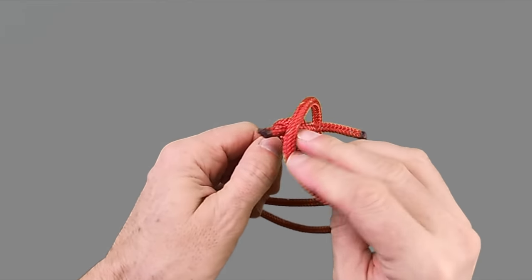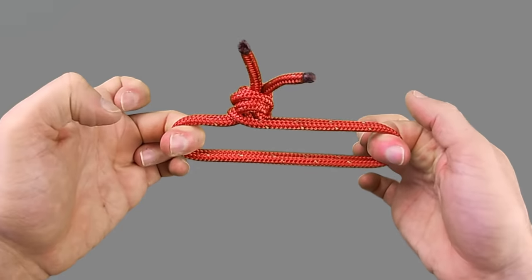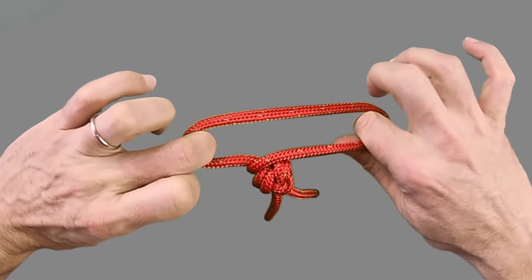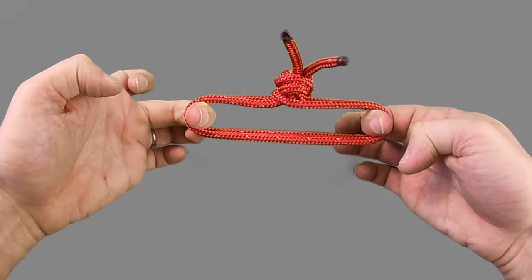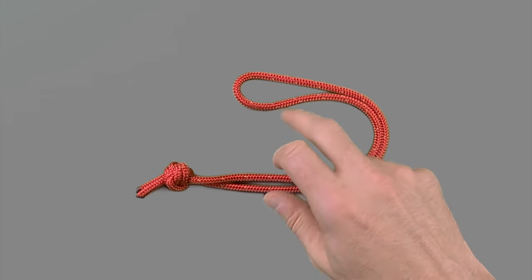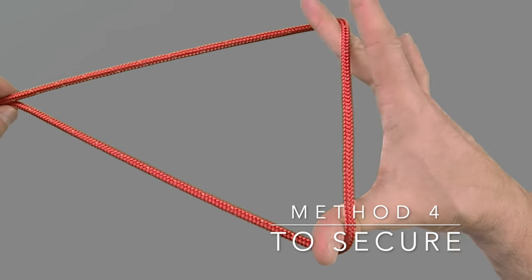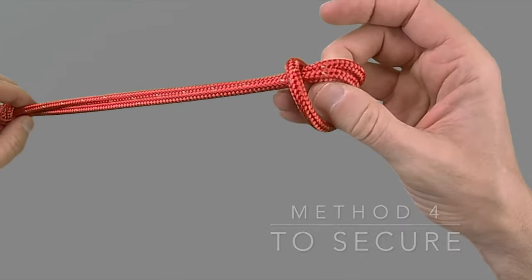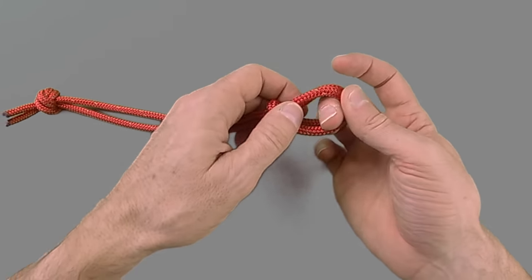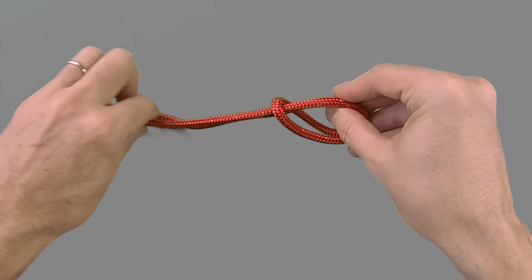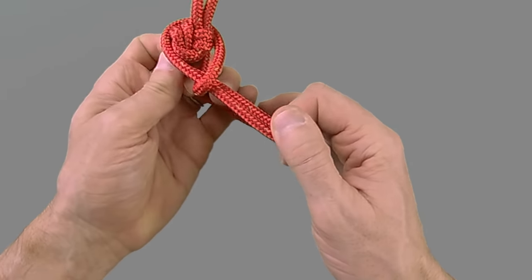To finish off today's soft shackle demonstration we're going to show you the fourth and final way to secure your soft shackle. To do this one we're going to create a lark's head in the end of the soft shackle. You then open up the lark's head wide enough to put your stopper knot through before tightening it on itself.